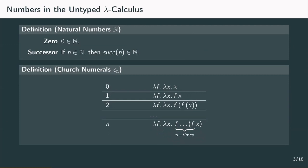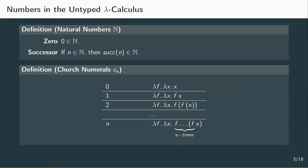We define a number as a lambda term with two arguments, f and x. The term for the number n then applies f n times to x. To construct 0, we have a term that depends on f and x and just returns x without applying f at all — it applies f 0 times to x. To construct the number 1, we have a term again with arguments f and x that returns f applied to x once. For 2, f is applied twice, and so on. An important thing to understand about Church numerals is that the number is the term — it represents the action of applying any function n times to any value. We'll mainly denote Church numerals by c with a subscript n, or cn, instead of writing out the whole term.